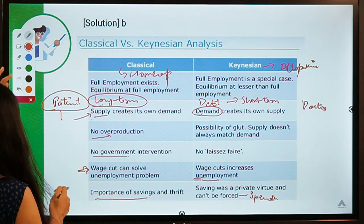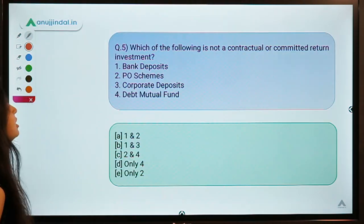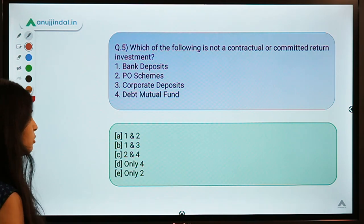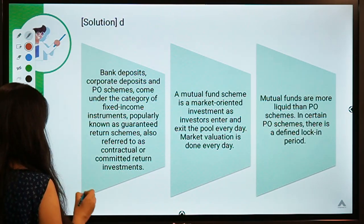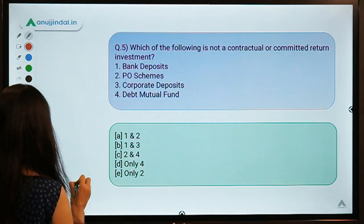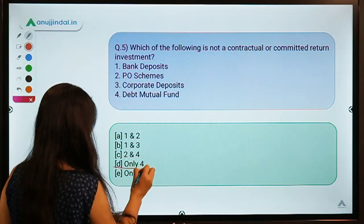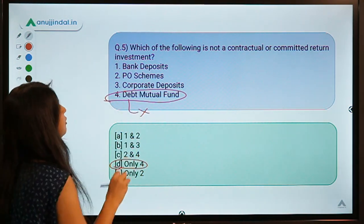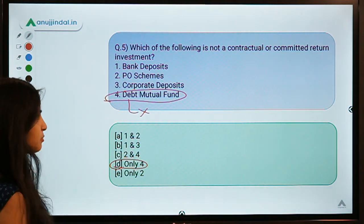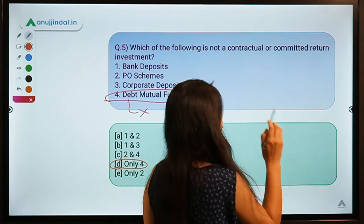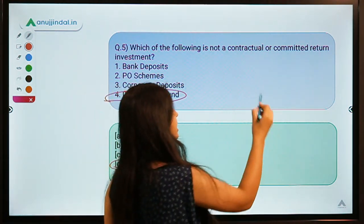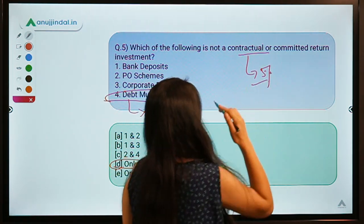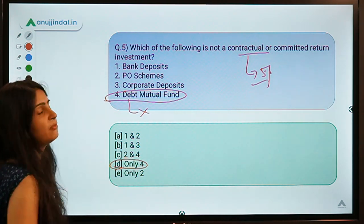Here is the last question: which of the following is not a contractual or committed return investment? The correct option is D — only option four, debt mutual funds, is not part of committed or contractual return investments. The name 'contractual or committed return' tells you the reward is fixed — for example, a five percent guaranteed interest rate. In mutual funds there is no such certainty as they are market driven.